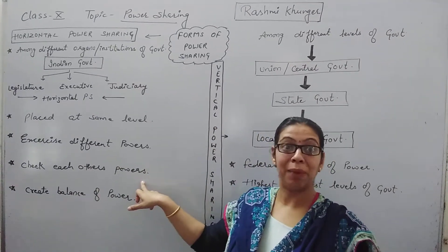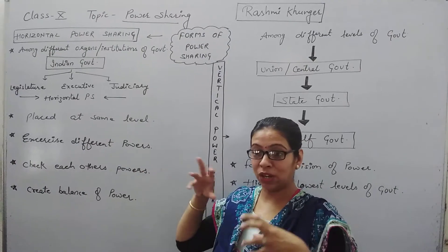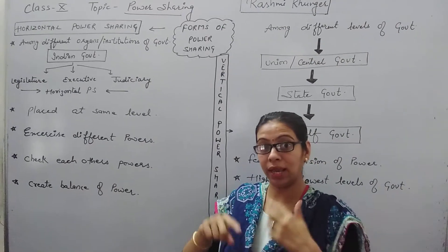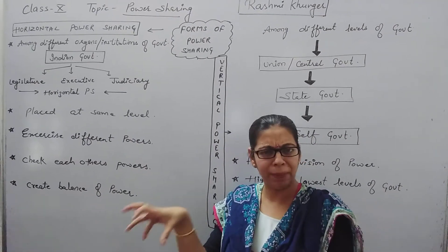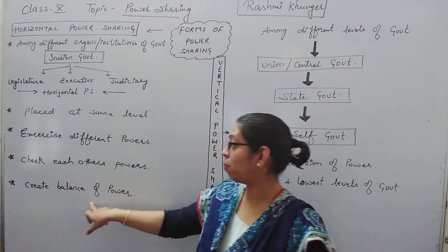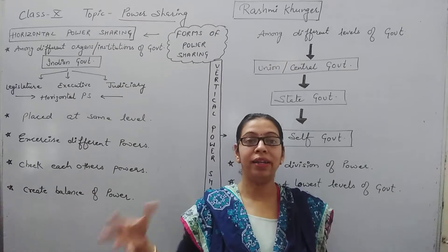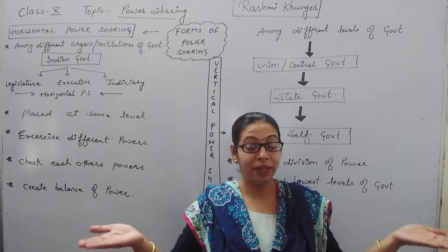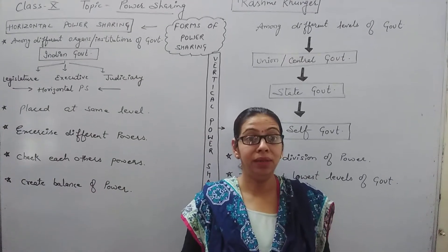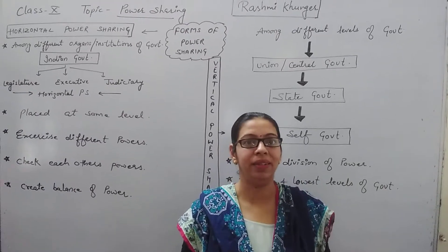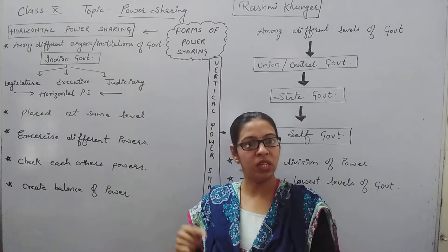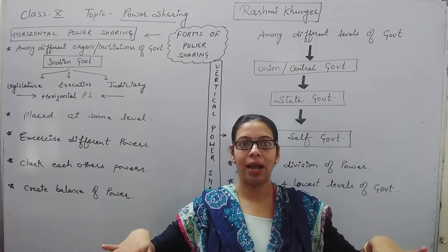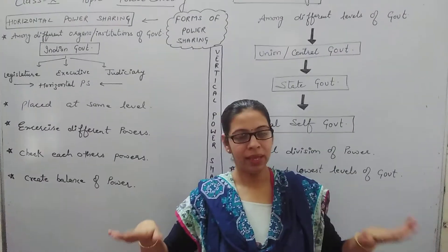They check each other's power — that's the check and balance system. Judiciary keeps an eye on the rest, Legislature keeps an eye on the rest too. So they are controlling and limiting each other's powers, and this creates a balance of power. Because they are limiting each other's powers, they don't let any one organ become more important than the other, and they are all placed at the same level.